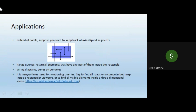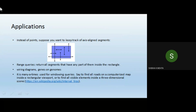The applications of interval trees: instead of points, suppose we want to keep track of axis-aligned segments and find intersections of a given range. For all kinds of range queries we use interval trees. Examples include wiring diagrams in embedded systems and chips being created, or genome analysis in bioinformatics. These interval trees are more efficient compared to other data structures used for solving such problems.